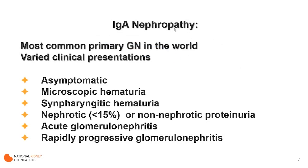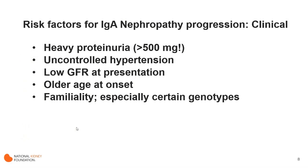IgA nephropathy is the most common primary glomerulonephritis in the world, and it has varied clinical presentations. Patients can remain asymptomatic for their entire life, but others present with microscopic hematuria or hematuria that occurs concomitant with a sore throat — called synpharyngitic hematuria — which is often a trigger for evaluation and diagnosis. Very few patients are nephrotic, less than 15%, but most are non-nephrotic. Patients can also present with either acute or rapidly progressive glomerulonephritis.